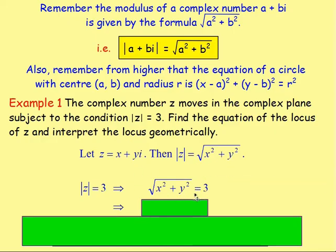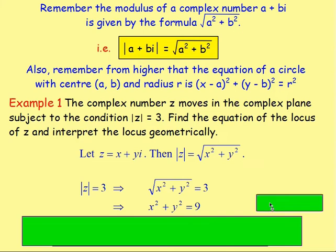To get rid of the square root, we square both sides. You end up with x² + y² = 9. So the equation of the locus is x² + y² = 9. If we think about that geometrically, that is the equation of a circle. Because it's not (x − 2) or (x + 7), it's just x squared, you know the centre is going to be (0, 0) — the origin.